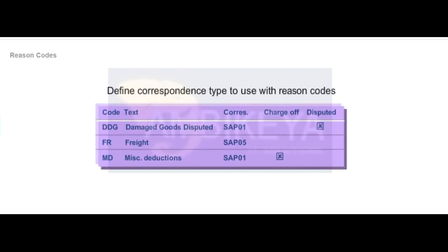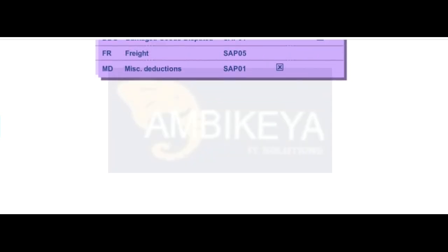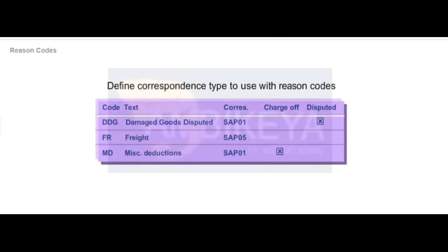You can specify the default correspondence type for your business partner in case of payment differences for different tolerance groups. If you want to always issue the same type of correspondence, enter the correspondence type in the message required field. If you want to choose the correspondence type during payment settlement, leave the field blank.